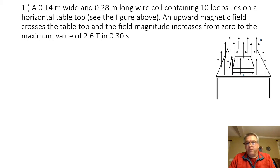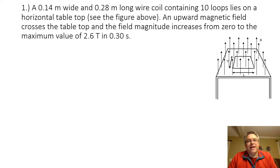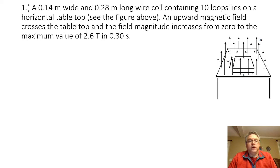Hello everybody. In this problem we are going to be taking a look at the solution to the honors electromagnetic induction practice problems, number one. We have a 0.14 meter wide and 0.28 meter long wire coil containing 10 loops lying on a horizontal tabletop. An upward magnetic field crosses the tabletop and the field magnitude increases from 0 to a maximum value of 2.6 tesla in 0.30 seconds.